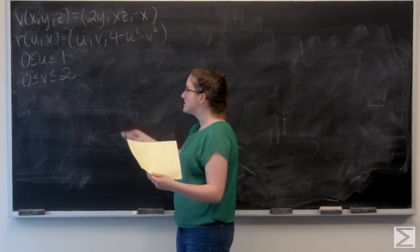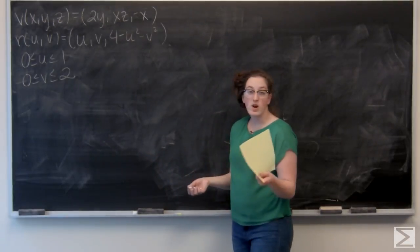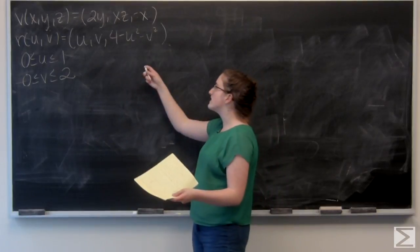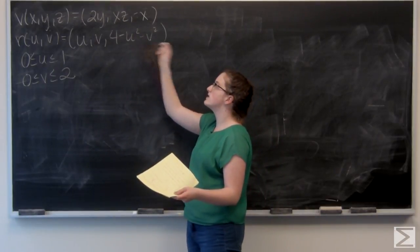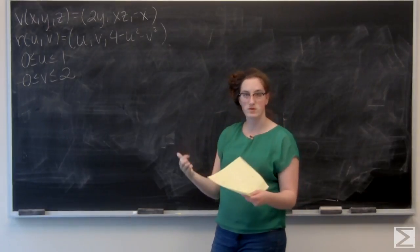So I've got this parametrization with u and v, and to draw it I'm going to think about u being like x and v being like y. So I get the equation z equals 4 minus x squared minus y squared, which is a downward parabola. So let's go ahead and draw it.